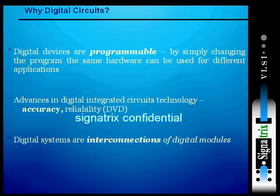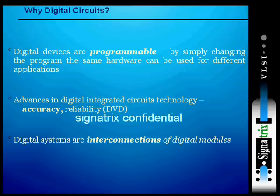By simply changing the program, the same kind of hardware can be used for different applications or purposes. The advances in digital integrated circuit technology — the IC technology — focus on accuracy and reliability. Digital signal systems are all interconnections of digital modules; when a particular module is selected or coded, we can combine these different coded versions by certain interconnections, and that actually forms a digital system.